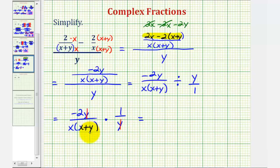And unfortunately, nothing else simplifies. So we have negative two times one, that's negative two. And our denominator is x times the quantity x plus y.